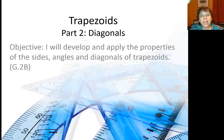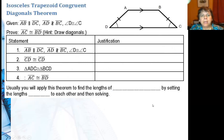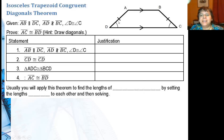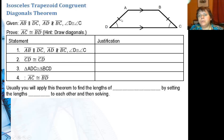Now we're going to look at the diagonals of a trapezoid. The isosceles trapezoid congruent diagonals theorem — that's a mouthful — says that if I make two diagonals, they will always be the same length. So what I'm starting with is here's my trapezoid. I haven't really told you anything except that it's isosceles — that's part of the theorem.